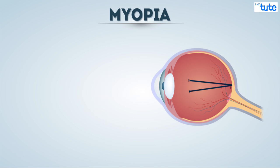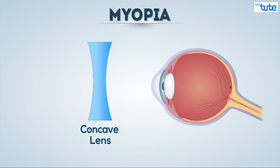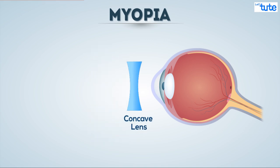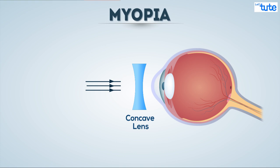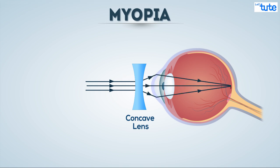This can be corrected with the use of a simple concave lens. A concave lens is a lens that possesses at least one surface that curves inwards and is thinner from its center when compared to its edges. It's a diverging lens, meaning that it spreads out light rays that have been refracted through it.